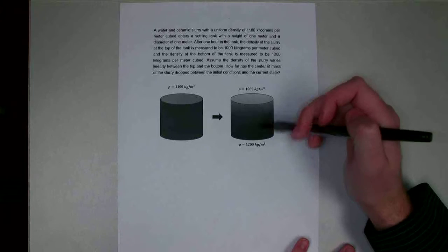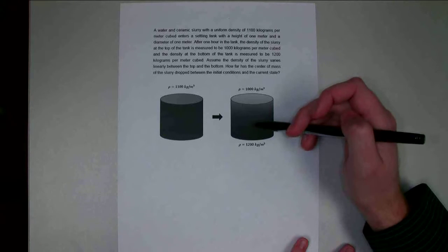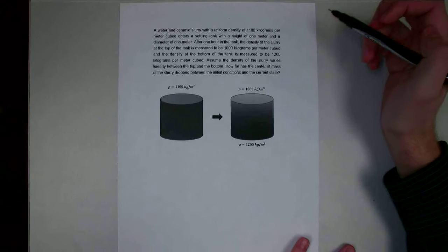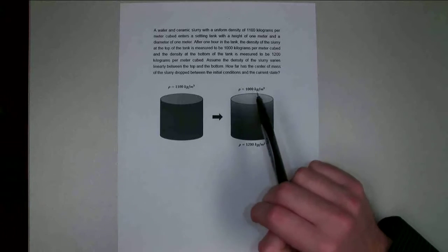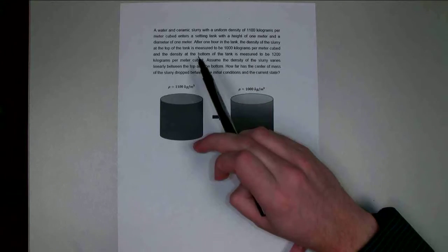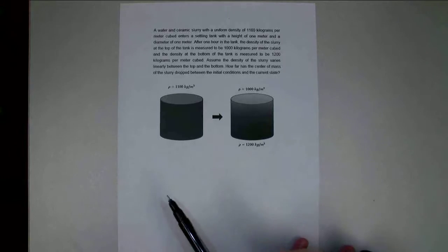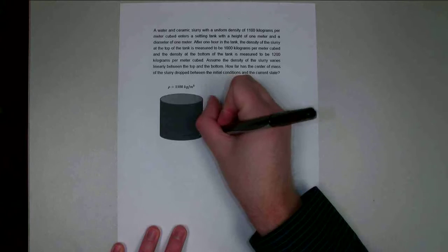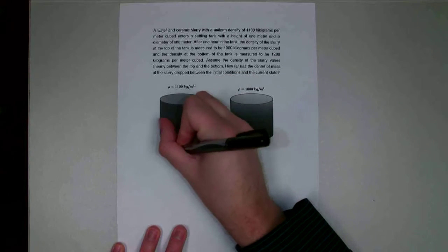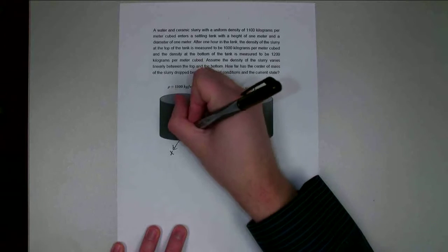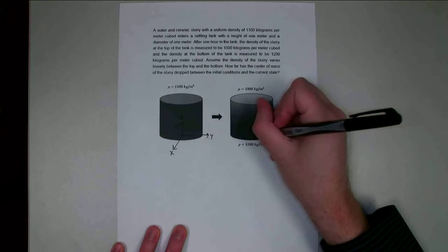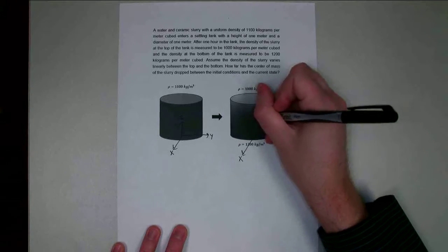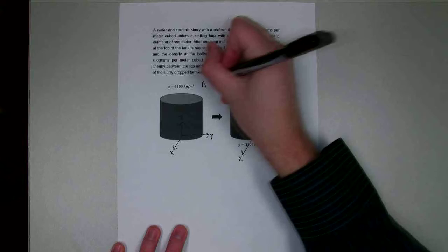We want to figure out how far the center of mass of the ceramic slurry drops between state one and state two. If we get denser material at the bottom, the center of mass shifts toward that bottom. Each tank has a height of 1 meter and a diameter of 1 meter. I'll draw in the axes — X, Y, and Z going up the center of the tank — for both state A and state B.